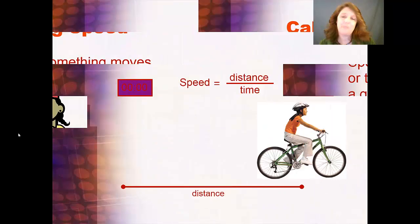Here you can see that this person on a bike is traveling this particular distance, and it's taken her from zero to two seconds. It's taken her two seconds to travel this distance. So when you're finding out the speed here, you're going to measure this distance and divide it by two seconds, and that's her speed in meters per second.